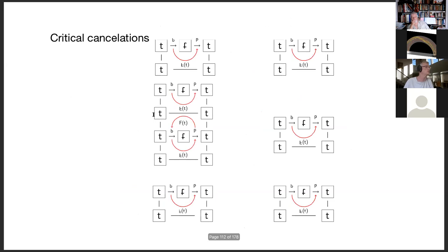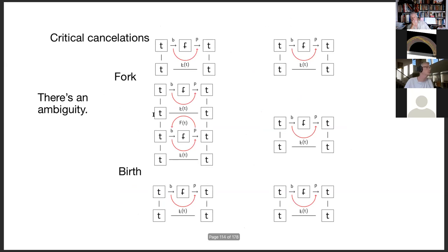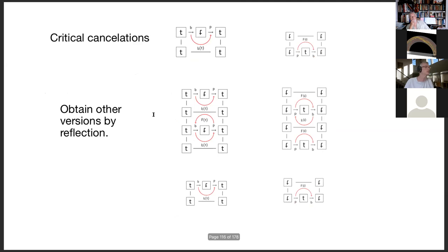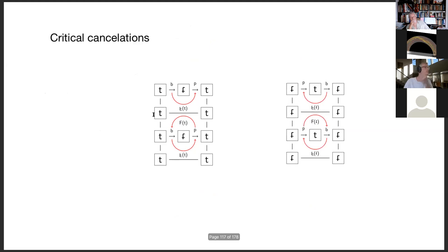Let's look at critical cancellation. The only thing I need to see is either this picture or this picture, because once you see that picture you can realize it's comparable to one of the Fs — in this case, comparable to an upside-down F. There's an ambiguity in this picture; we can get through those by means of birth or fork, or death and saddle. If you want the other pictures, literally rotate the picture.